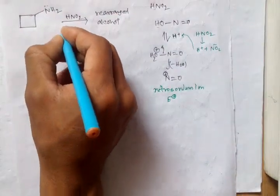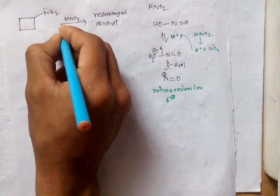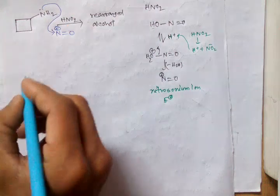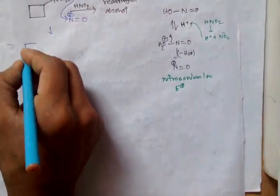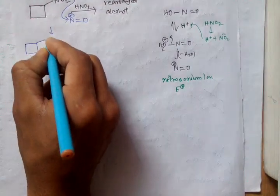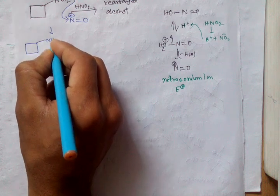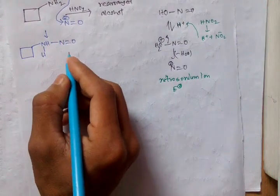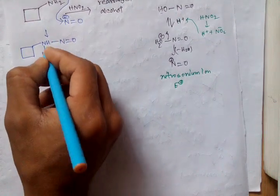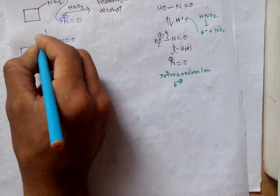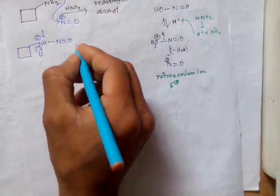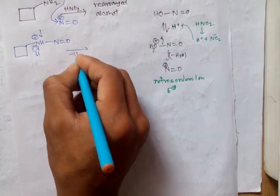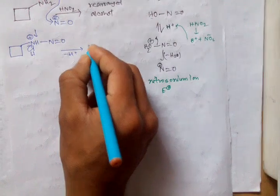When the lone pair of the nitrogen atom attacks here, removing H+, we get this system with a positive charge. After removing H+, it forms this intermediate.